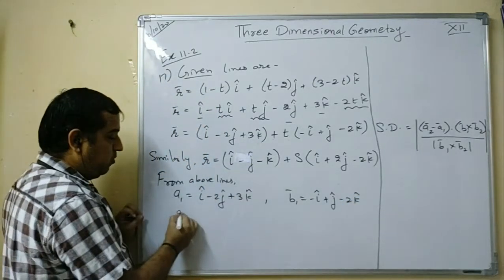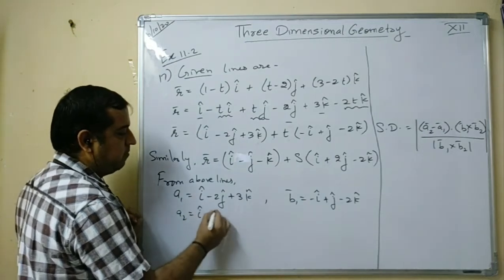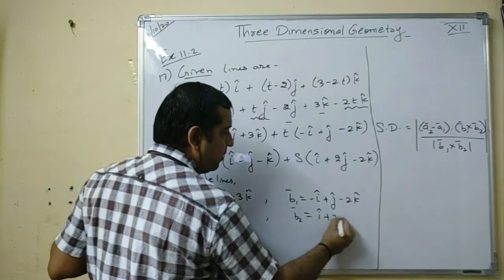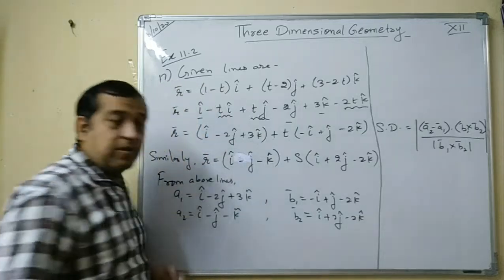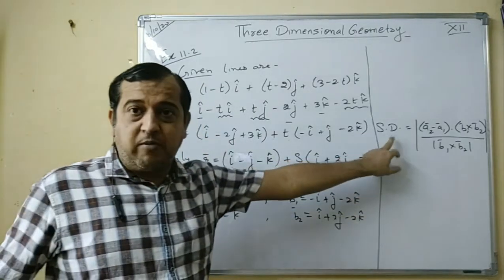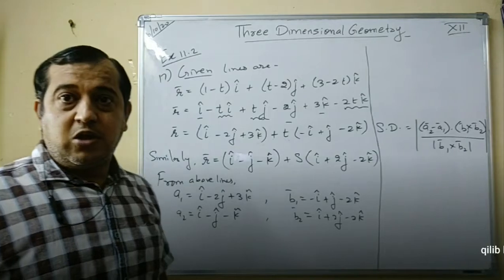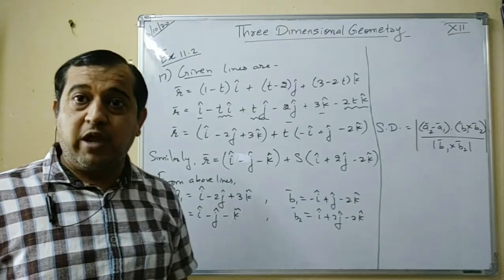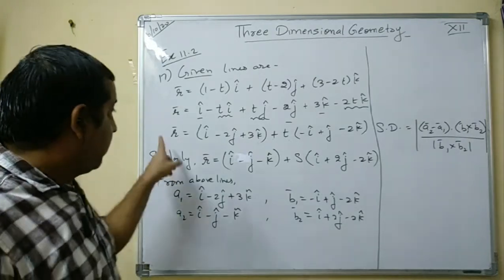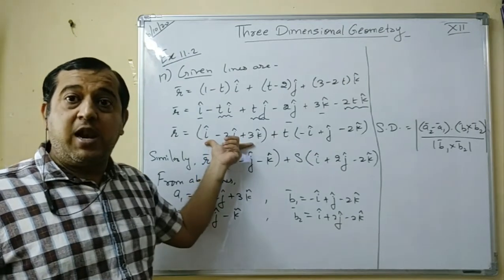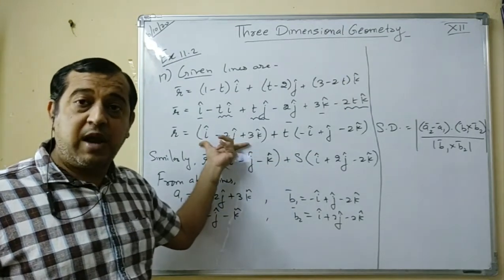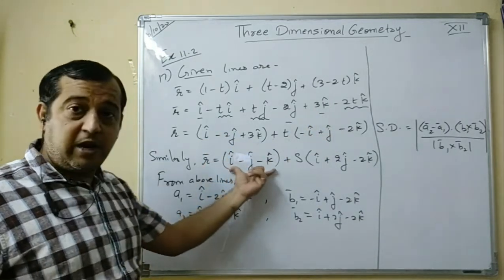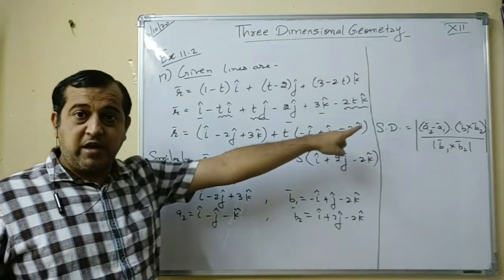From the second line, a2 = i-cap - j-cap - k-cap, and b2 = i-cap + 2j-cap - 2k-cap. In the first line, terms free from t give a1, and terms with t give b1. In the second line, the constant part is a2 and the directional part is b2.